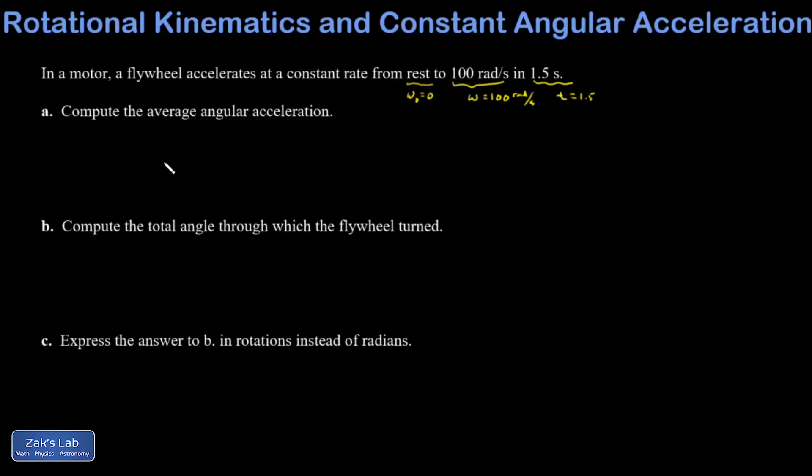And we're asked, compute the average angular acceleration. Our average angular acceleration is just a delta omega. How much did the angular velocity change divided by how much time went by? And so that's 100 radians per second. If I'm real formal about this, the initial was zero. So 100 minus zero over the time it took, which was one and a half seconds. In rounding it, I get 66.7 radians per second squared.